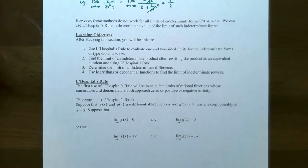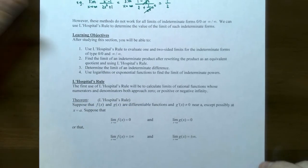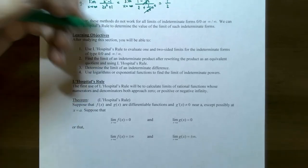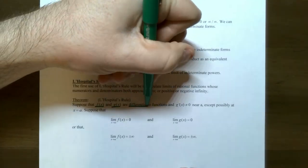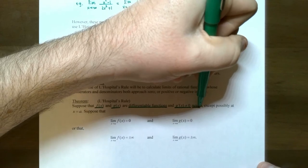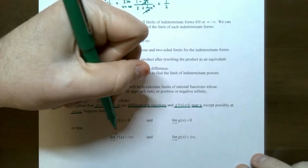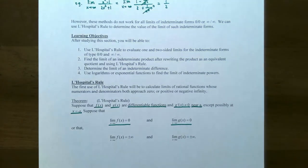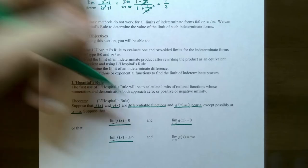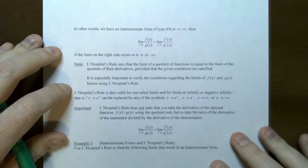L'Hôpital's Rule is used to calculate limits of rational functions where the numerator and denominator both approach 0 or positive or negative infinity. The theorem requires that both f(x) and g(x) are differentiable, and g′(x) cannot be 0 near x = a (though the derivative could be 0 at x = a itself). If the limit of f(x) as x approaches a is 0 and the limit of g(x) is also 0, or both are ±∞, then L'Hôpital's Rule can be applied.